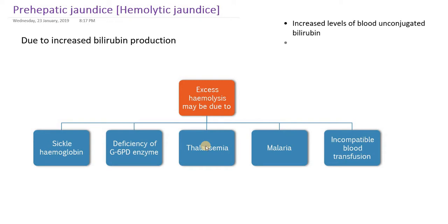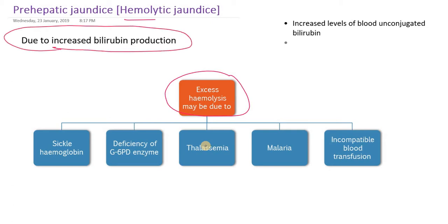Hello everyone. In this presentation we are going to study about prehepatic jaundice, which is also called hemolytic jaundice. It is called hemolytic because there will be excess hemolysis that leads to prehepatic jaundice. Prehepatic jaundice means there is increased bilirubin production, due to increased or premature lysis of the RBC, which is called hemolysis.